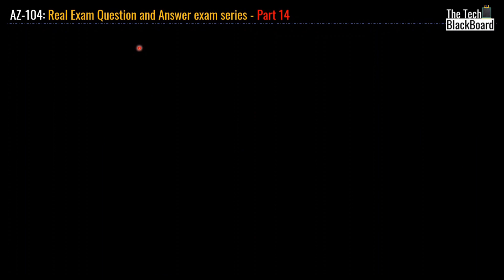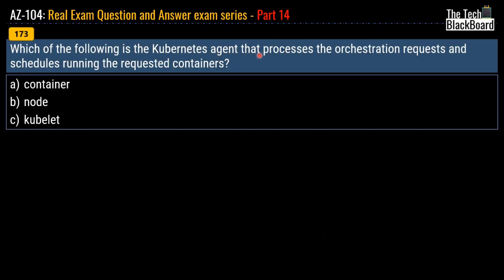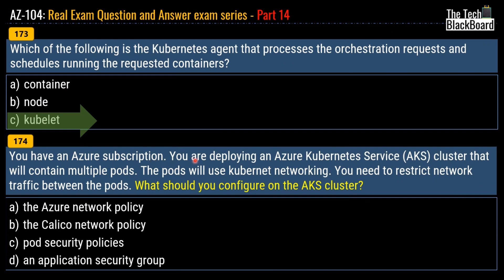Question number 173 asks which Kubernetes agent processes orchestration requests and schedules running the requested containers. Options are container, node, or kubelet. The correct answer is option C, kubelet. Question number 174 says you are deploying an AKS cluster with multiple pods using Kubernetes networking and need to restrict network traffic between pods. Options are Azure network policy, Calico network policy, pod security policy, or application security group. The correct answer is option D, the Calico network policy.